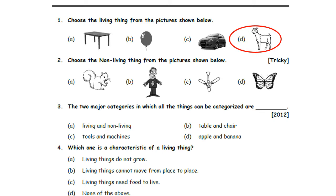Second one: choose the non-living thing from the pictures shown below. Option A: Coral. Option B: Man. Option C: Ceiling Fan. Option D: Butterfly. You all know the characteristics of non-living things — they cannot grow, they cannot feel, they do not need food, air, or water. So, Option C, Ceiling Fan, is the correct answer.